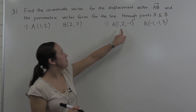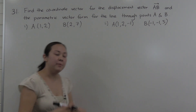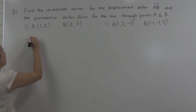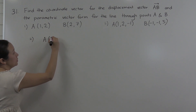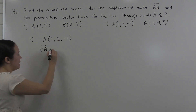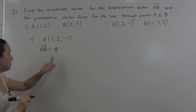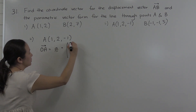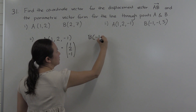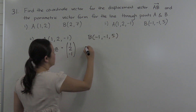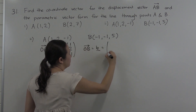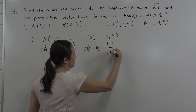Now in part 2 we have 2 points but in 3 dimensions, and the solution works pretty much the same. In part 2, point A with coordinates (1, 2, -1) we associate with the position vector OA, or lowercase a, and in column form that's (1, 2, -1). B has its coordinates, and we associate that point B with the position vector OB, which we write in column form as (-1, -1, 5).